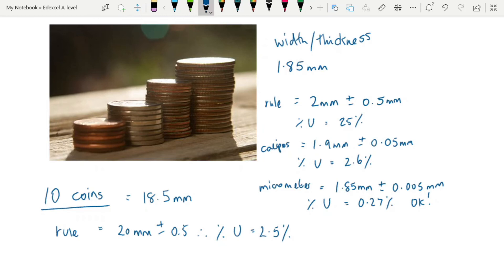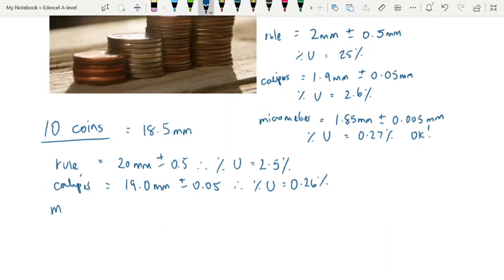Because we've multiplied the number of coins by 10, we've divided our percentage uncertainty by 10. With our caliper, we would get 19.0 millimeters, plus or minus 0.05, giving us a percentage uncertainty of 0.26%, and again, a tenth of what we had before. And with our micrometer.